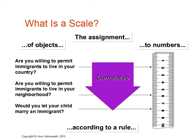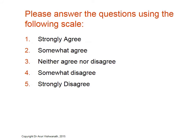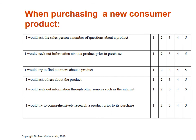How these rules are created is something we'll discuss in subsequent lectures. Here's another example of a scale that measures how people seek information while purchasing a new consumer product. This scale uses a 1 to 5 response scale — 1 for strongly agree, 2 for somewhat agree, 4 for somewhat disagree, and 5 for strongly disagree. There are six different statements, and when statements all relate to a particular construct within a single scale, we call them items — not individual questions.